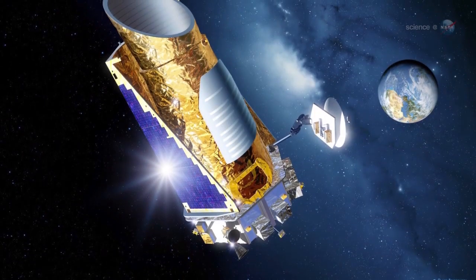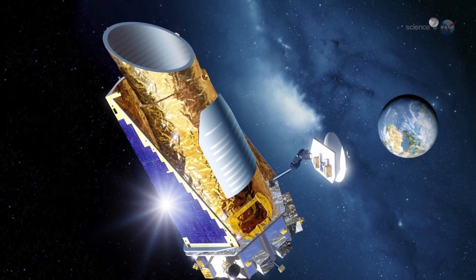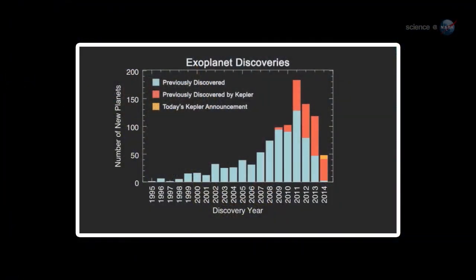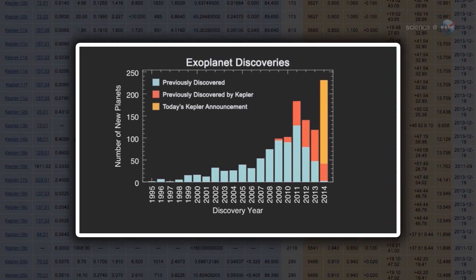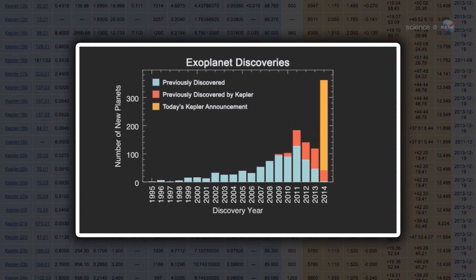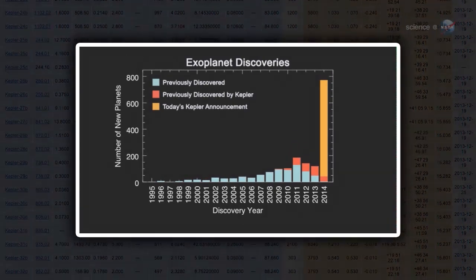On February 26, the Kepler team announced 715. Kepler has always been good at finding planets. Even before the announcement, the observatory had confirmed 246 new worlds outside the solar system. The latest discoveries almost quadruple that number.